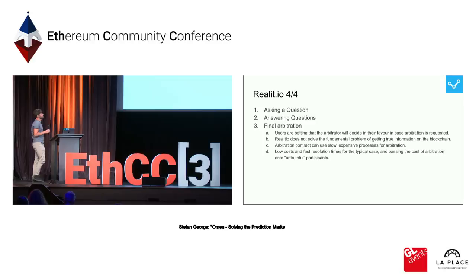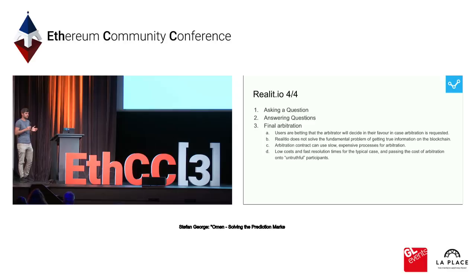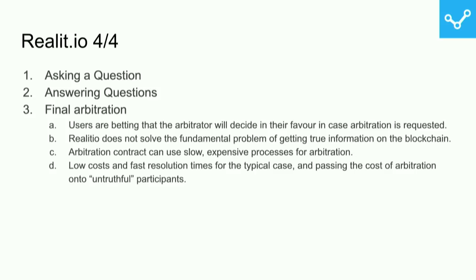RealityIO doesn't fully solve getting the truth on the blockchain, but at least it provides an efficient mechanism to filter out all questions that can be simply answered. Only if people truly cannot agree on the outcome does it allow anyone to trigger final arbitration, ensuring a more complex mechanism can resolve the question.